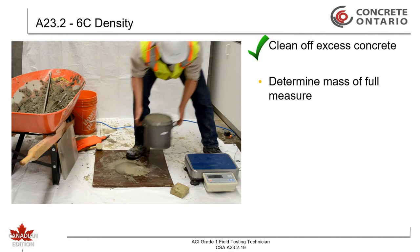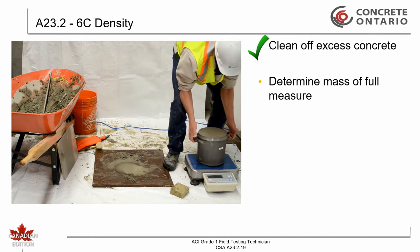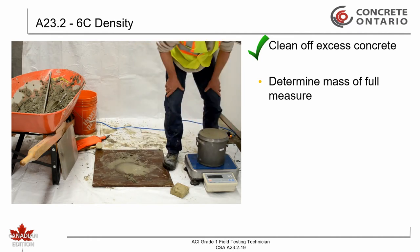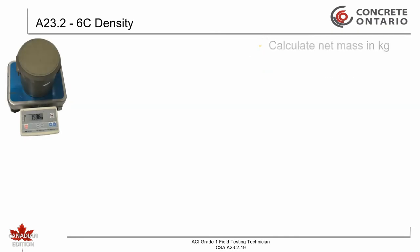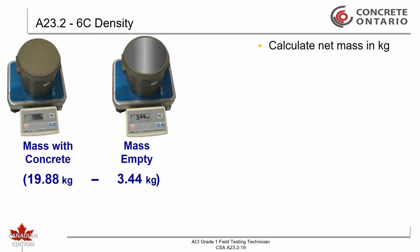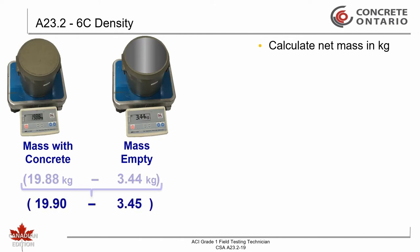Determine the mass of the full measure to the nearest 0.05 kilograms. Determine the net mass by subtracting the mass of the previously recorded empty container from the mass of the full container. In this case, 19.88 kilograms minus 3.44 kilograms, rounded to the nearest 0.05 kilograms, which gives us 19.90 minus 3.45, resulting in a net mass of 16.45 kilograms.